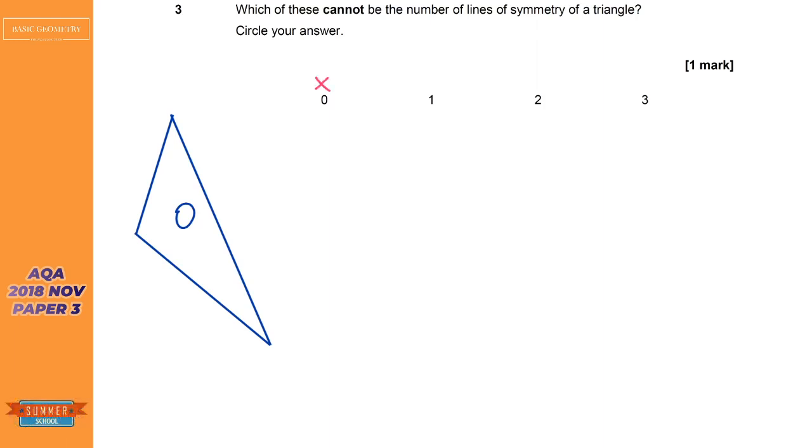Okay, next one. Let's have a think. One line of symmetry will be an isosceles like that and so we've definitely got one line of symmetry on there.